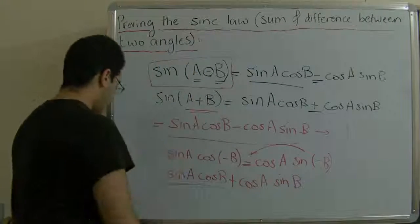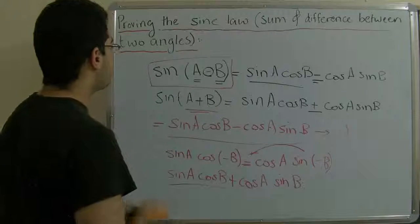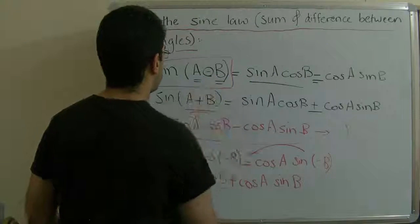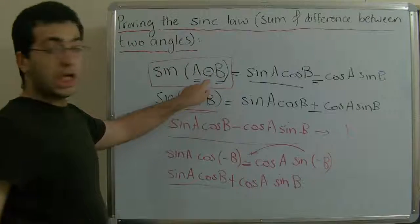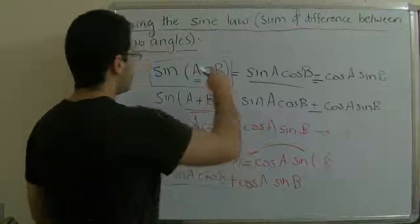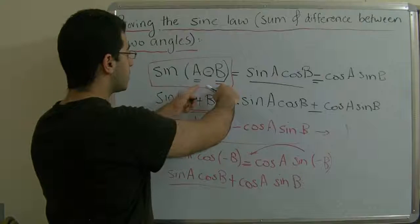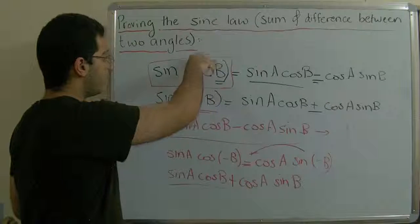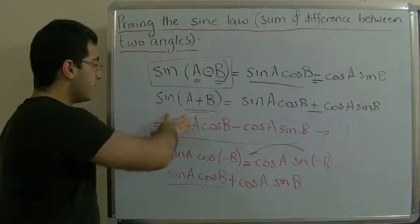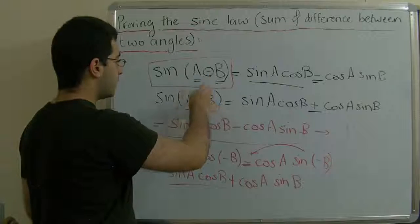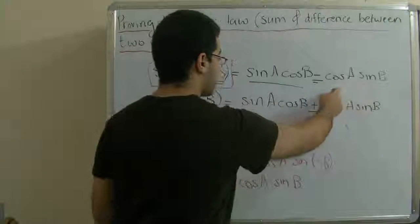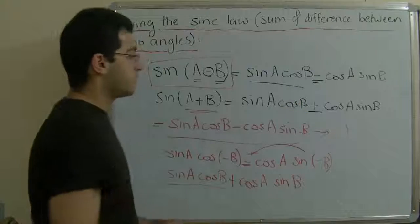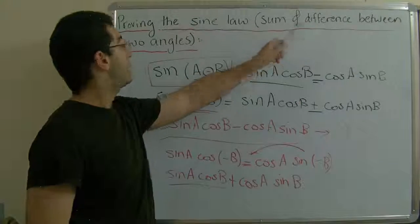So getting the sine of the difference and sum of two angles is very simple. Sine(a minus b): we get sine of the first times cosine of the second, we do not change the sign, and in the second term we get cosine of the first times sine of the second. For the sum, we change the order the same way, and put a positive sign. This is how to get the sine law of the sum and the difference between two angles.